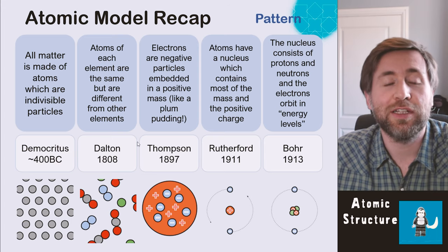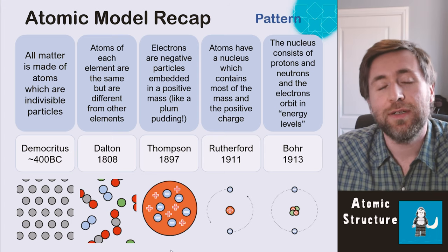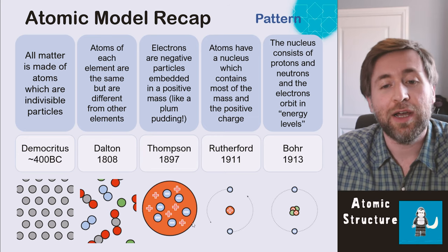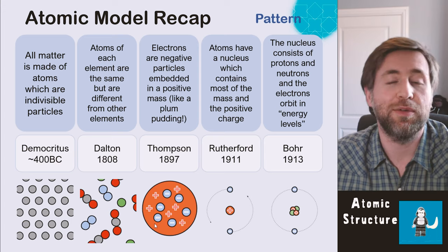Thompson model included the electron. So Thompson discovered the electron. He said the electrons will be embedded within a positive mass. So the atom now has a structure. There's something that can be taken out of it.